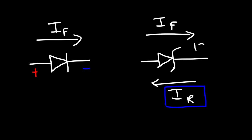So let's say if we have a 12 volt Zener diode. When you place it in reverse mode, if the voltage is 12 or more it will conduct in that direction. Let's apply it to a typical circuit problem. Let's say we have a battery and we have a current limiting resistor in series with a Zener diode that's in reverse mode.